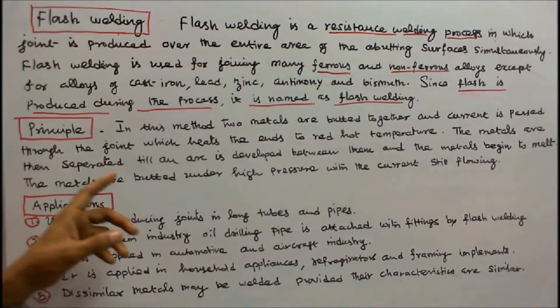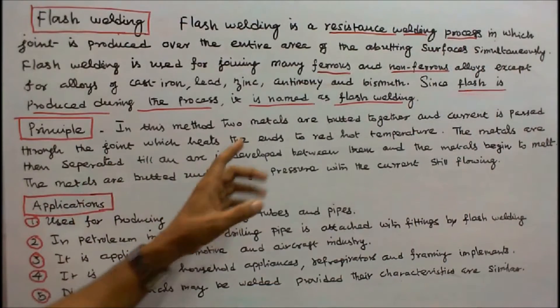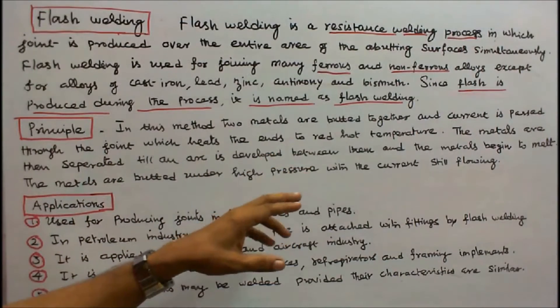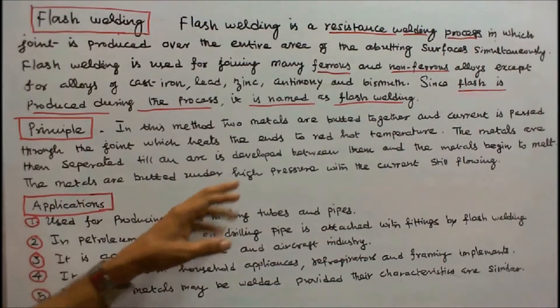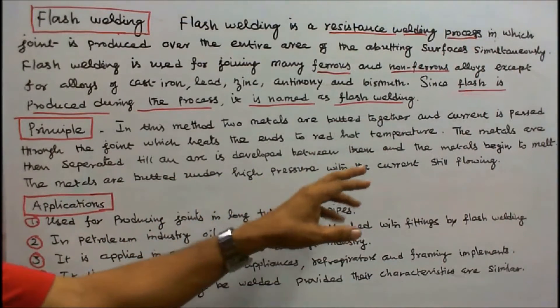The metals are then separated till an arc is developed between them and the metals begin to melt. The metals are butted under high pressure with the current still flowing.